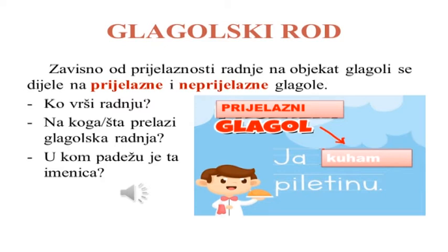Glagol hodati ne postavlja takve zahtjeve. Zavisno od prijelaznosti radnje na objekat, glagoli se dijele na prijelazne i neprijelazne glagole. U sljedećem primjeru uočit ćemo prijelazni glagol: Ja kuham piletinu. Ko vrši radnju? Radnju vrši subjekt. Na koga, na šta prelazi glagolska radnja? Ona prelazi na piletinu – na predmet, objekt. U kom padežu je ta imenica? Ova imenica je u akuzativu bez prijedloga. Glagoli s kojih radnja prelazi na predmet, objekt, to jest na imenicu u akuzativu, zovu se prijelazni glagoli.